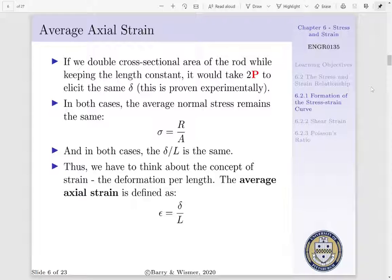Now, in both cases, a bar with an area A and applied load P, and our bar with an area 2A and applied load 2P, they'd be experiencing the same normal stress, where sigma would be equal to R per A.